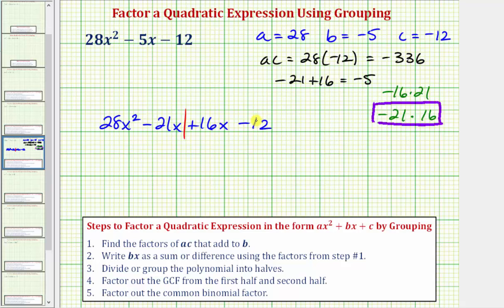Step four, we now factor out the greatest common factor from the first half and the second half. So looking at just the first two terms, notice how the greatest common factor would be seven x. So we'll factor out seven x from the first two terms only. That leaves us with four x minus three. Now we want to factor the greatest common factor from the second two terms, which would be four. So we'll write plus four, and then we're left with the quantity of four x minus three. Notice how we do have a common binomial factor in these two products, which should always be the case when applying the factor by grouping technique.